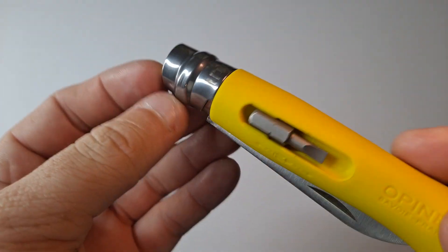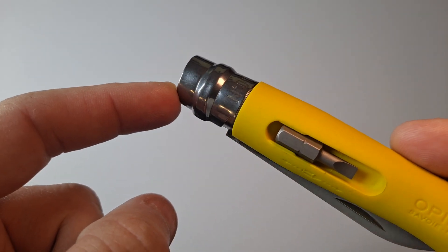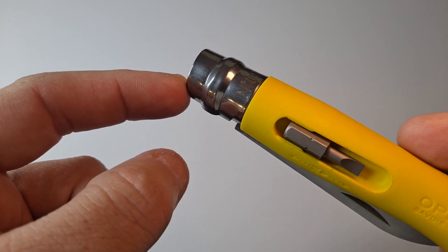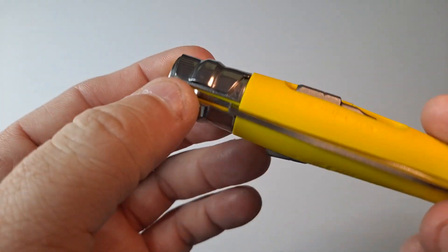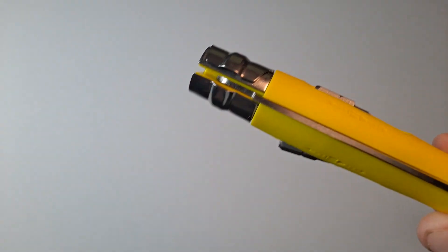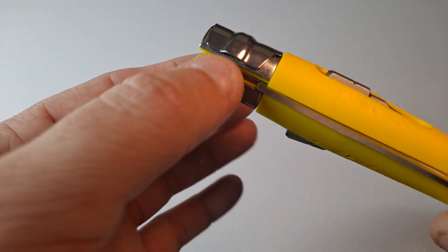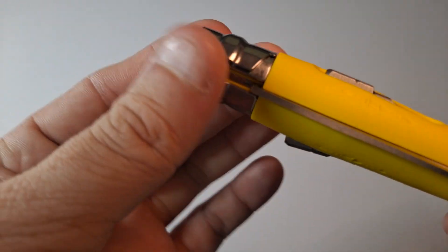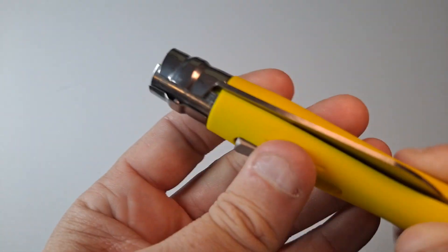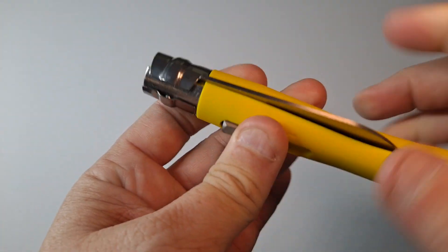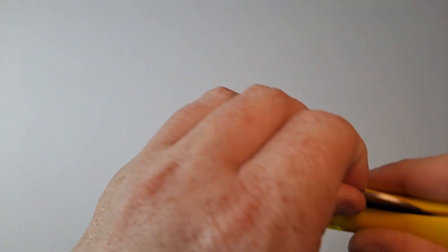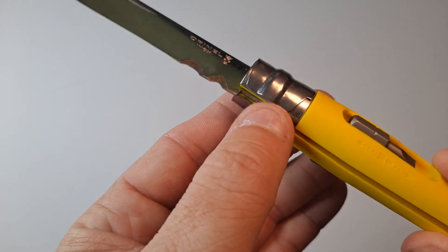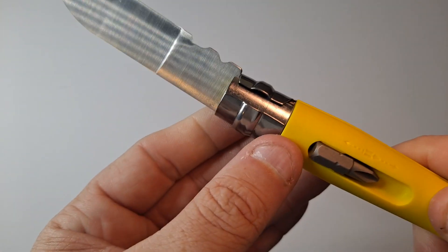Anyway, so here, this is what they call a Virobloc. I'm not sure if I say that right, a Virobloc, V-I-R-O-B-L-O-C. It's a locking ring, and unlike most that have like a liner lock, this uses a collar that turns. You see this little wedge shape in here? If you turn it, it prevents the blade from opening. If you turn it back the other way so it's straight, you can open the blade. Turn the collar again, and it locks the blade. So it's a nice positive lock.